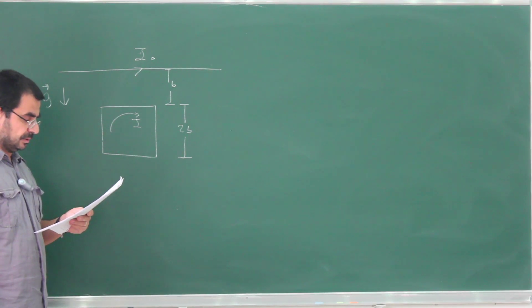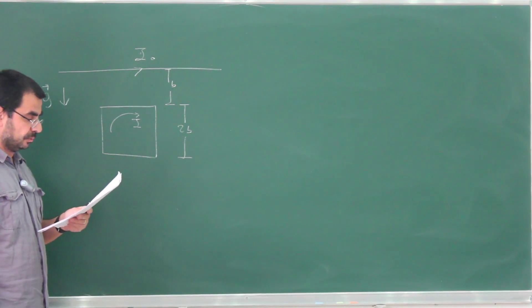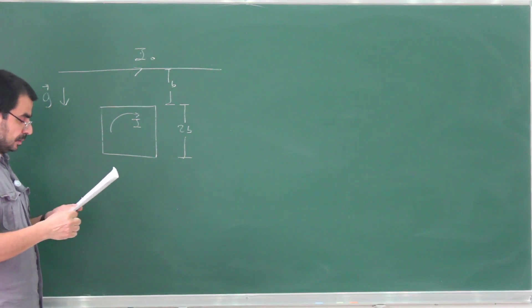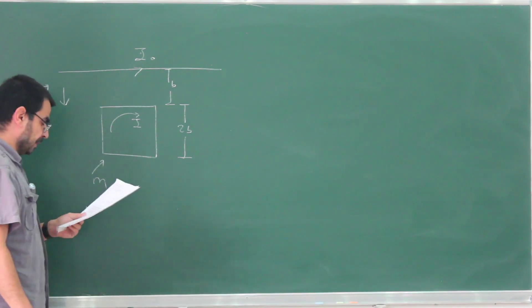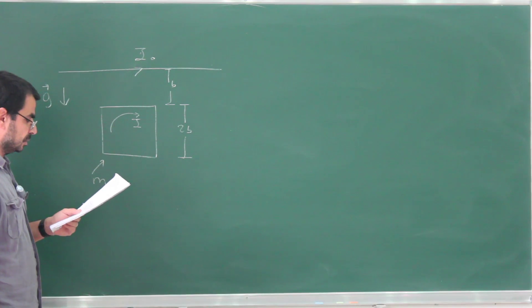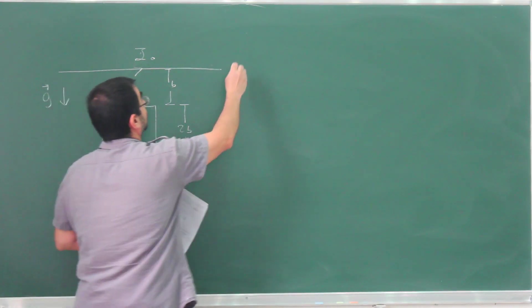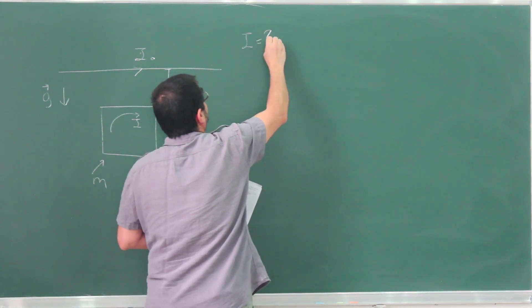The loop carries a clockwise current I, which has been adjusted so that the net force exerted on the loop by the horizontal wire allows it to remain suspended at rest in this position. The mass is given as m. What is the magnitude of the current I that must flow in the square loop to keep it at rest? So what's the required I for suspension?